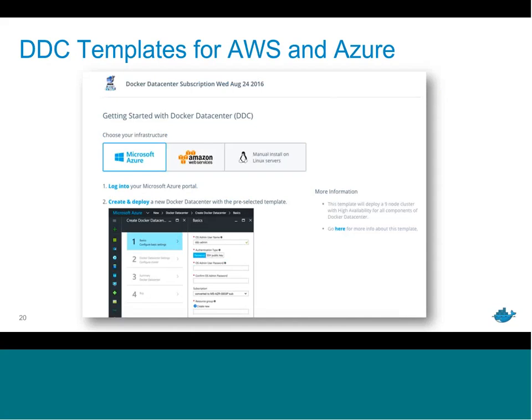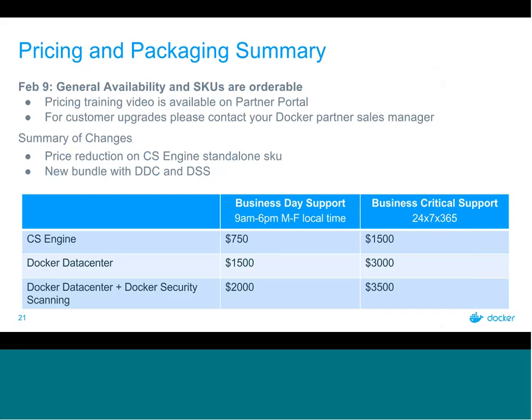We've also added templates for AWS and Azure that make it really simple to install an entire DDC cluster. Once you've set up a trial at docker.com/trial and gotten your license key, choose your infrastructure — today Azure, AWS, or manual Linux install — select a pre-built template, click a few defaults like number of managers and your cloud authentication key, and within minutes it spins up a fully set up Docker Data Center cluster with a load balancer, UCP and DTR wired up and integrated.